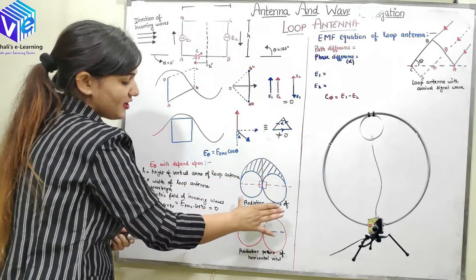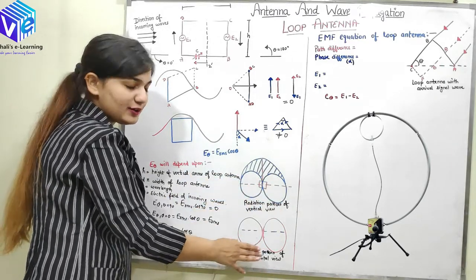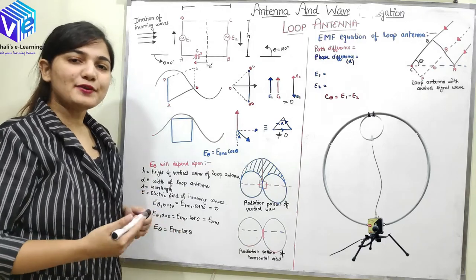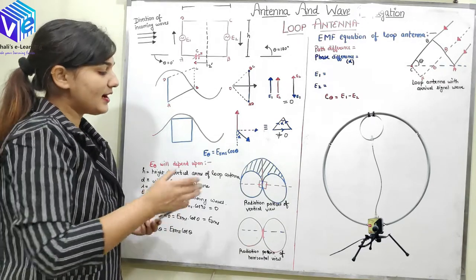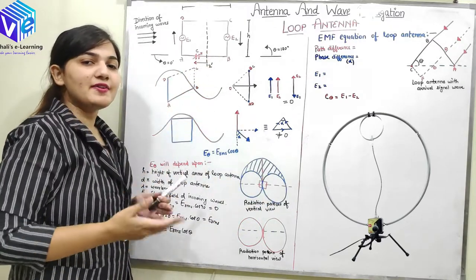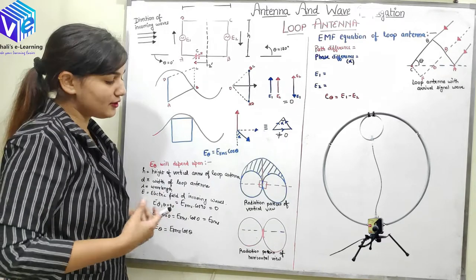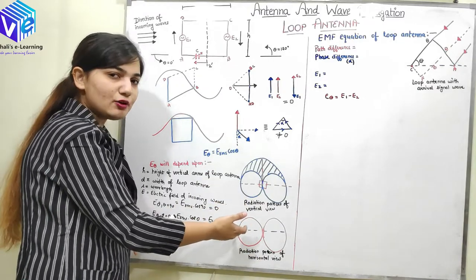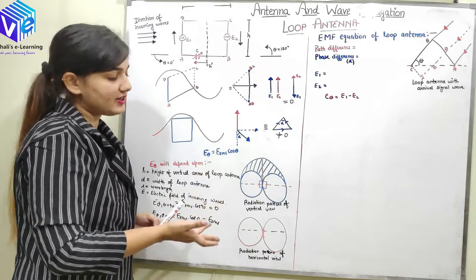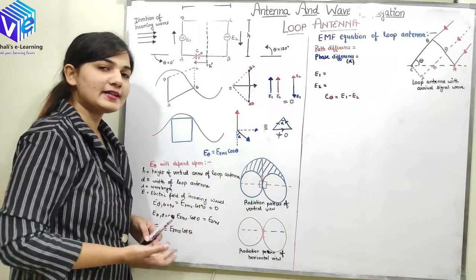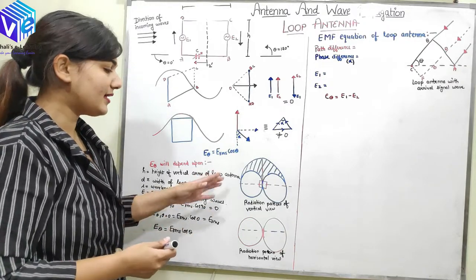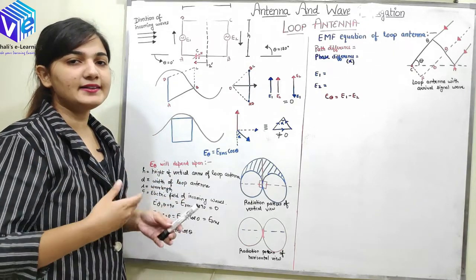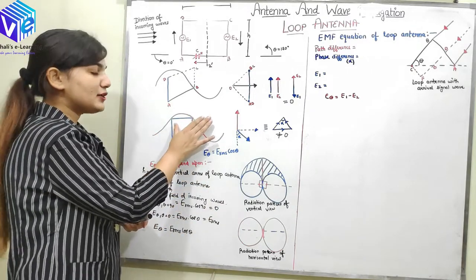Now I can see the radiation pattern of the loop antenna in the vertical view and the horizontal view. The loop antenna is acting like a dipole — I will talk about the dipole antenna in one of my next videos. When the loop antenna is very small, it acts like a dipole antenna. In the vertical view, the radiation pattern looks like a donut. In the horizontal view, the radiation pattern looks like a figure-eight. This is derived from the short electric dipole, which I will discuss in detail in those videos.